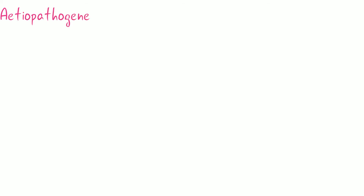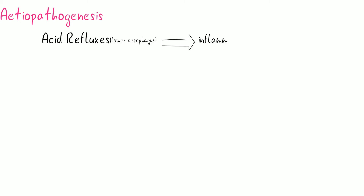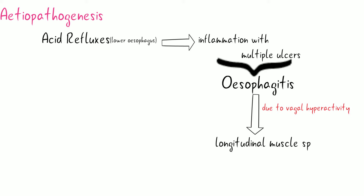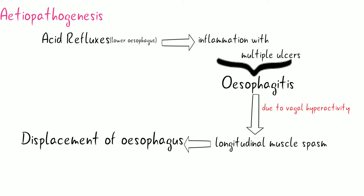Regarding the pathogenesis: acid reflux in the lower esophagus produces diffuse inflammation with multiple ulcers, which are called esophagitis. These multiple ulcers, due to vagal hyperactivity, lead to production of severe longitudinal muscle spasm, which causes displacement of the esophagus from the thorax, thus increasing acid reflux. This vicious cycle continues.